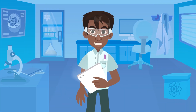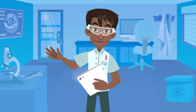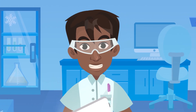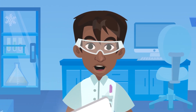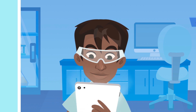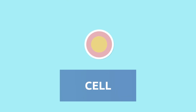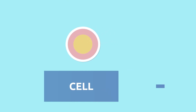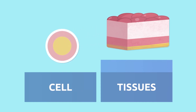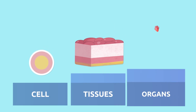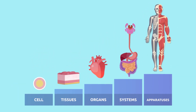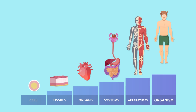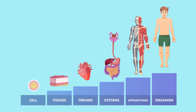What a trip we've had together! We've learned what types of components make up our organism. We started with the cell, then moved through the tissues, organs, systems, and apparatuses, and we finished with the organism.